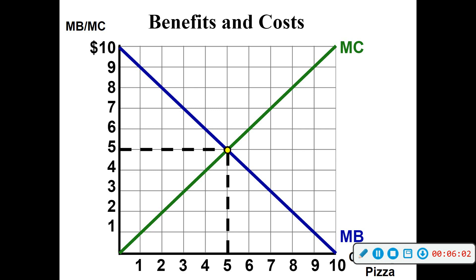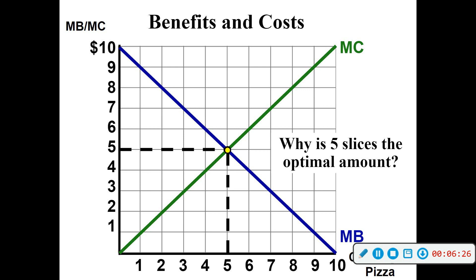At that point, it's not worth it anymore. In human nature, when we make decisions — and you've probably done this hundreds of times this morning — you're going to repeat an action as long as the benefit is greater than the cost, meaning you're getting more out of it than what it costs you. If at any point the cost becomes greater than the benefit, you're going to stop. So how many pieces of nachos would this person buy? Five — because up until that point they're getting more benefit, but past that point it's not worth it anymore.